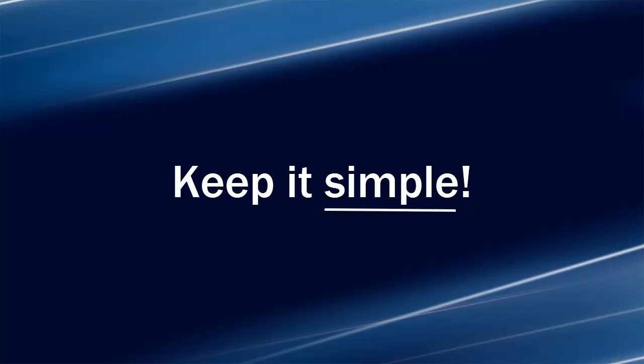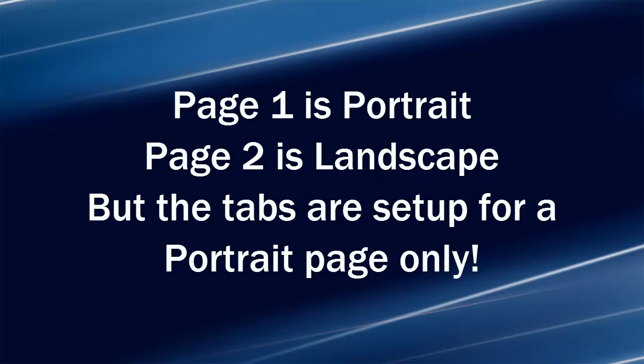Whereas if you have headers with text lined up on the left, in the center, and on the right, you will have to adjust it for every section. Let's say your first page is in portrait orientation and you have a landscape orientation on the second page, and the tabs in the header are set up for the portrait page only.